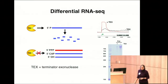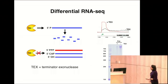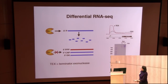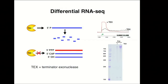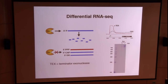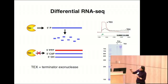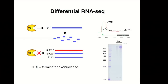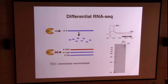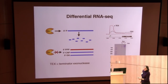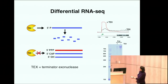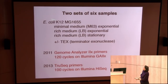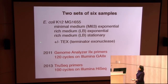The approach we're using is differential RNA-seq, pioneered by Cynthia Sharma together with Jörg Vogel. Basically, you isolate RNA and treat it with a terminator exonuclease, which degrades processed RNA such as ribosomal RNA, but can't digest primary transcripts. By comparing the deep sequencing data for the TEX-treated and untreated samples, you can see where you get enrichment for primary transcripts, allowing you to very precisely map promoters. We isolated E. coli cells grown in minimal media to exponential phase and rich media to exponential and stationary phase.